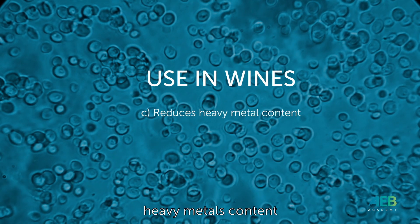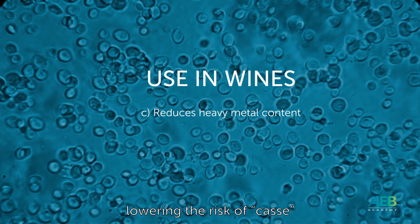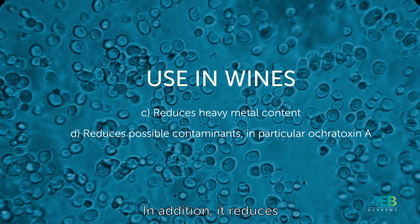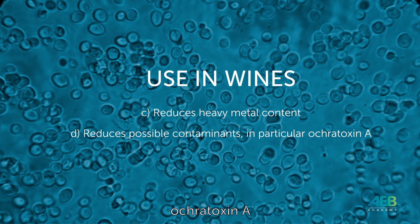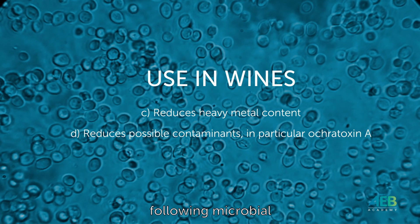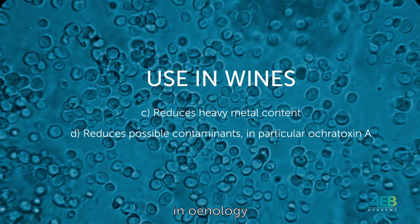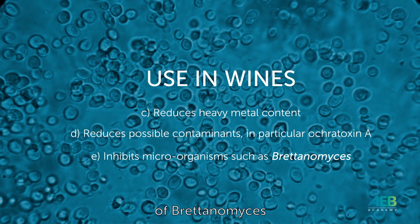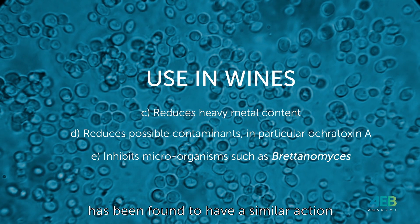Chitosan also reduces heavy metal content, lowering the risk of CAS — the formation of colloidal complexes of metals. In addition, it reduces undesirable compounds such as Ochratoxin A, a fungal toxin found following microbial alteration in grapes. The most important and wide-ranging use in oenology is in the inhibition of Brettanomyces, where no other adjuvant has been found to have a similar action.